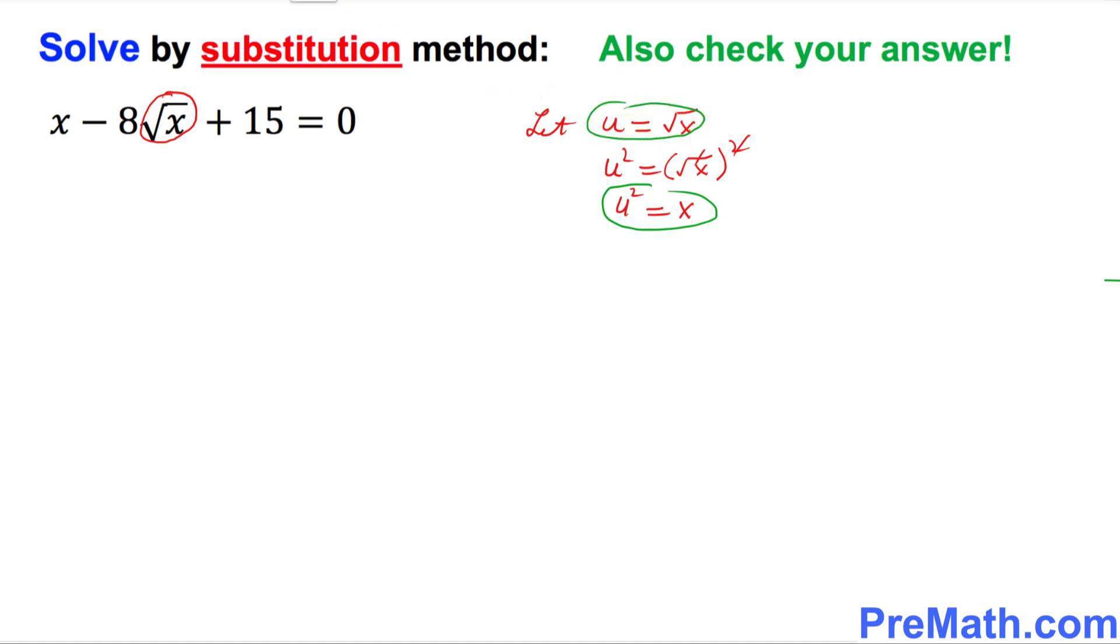We are going to plug these things into our original equation. So wherever you see x, x is being replaced by u squared minus 8 times, we know the square root of x is u, plus 15 equal to 0.